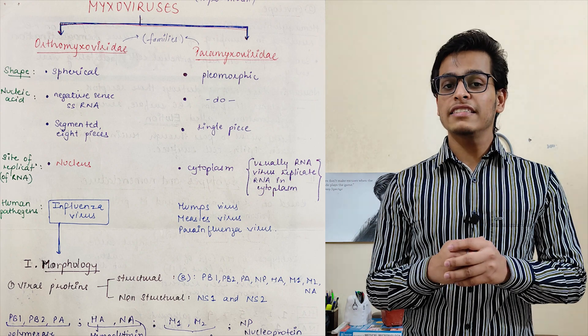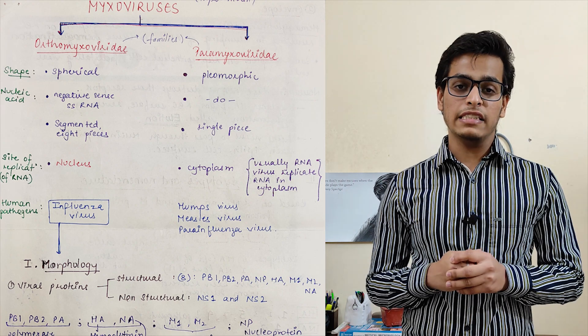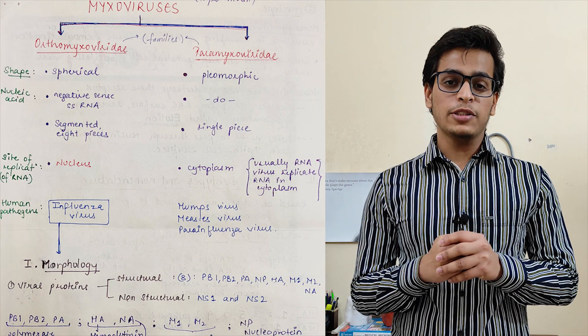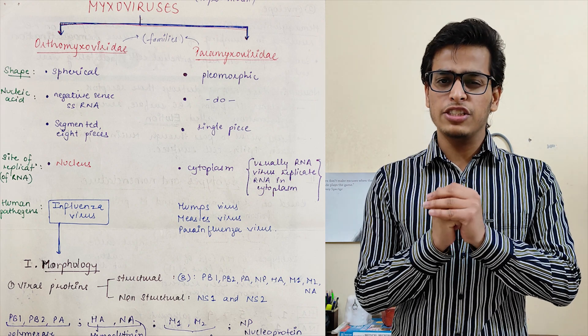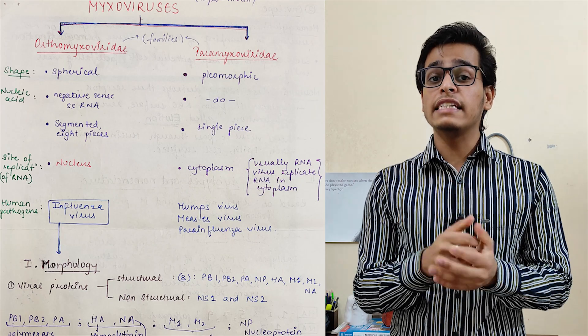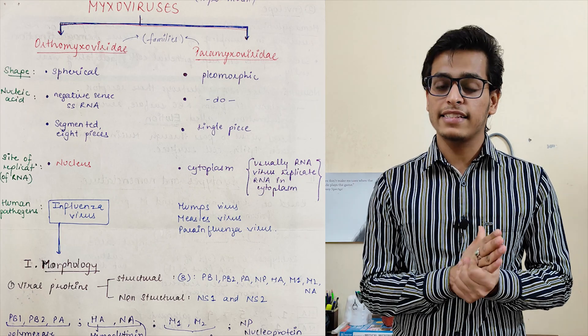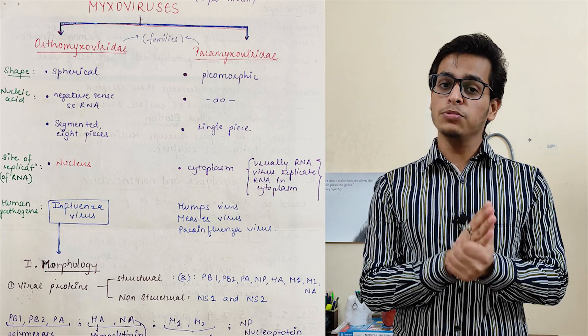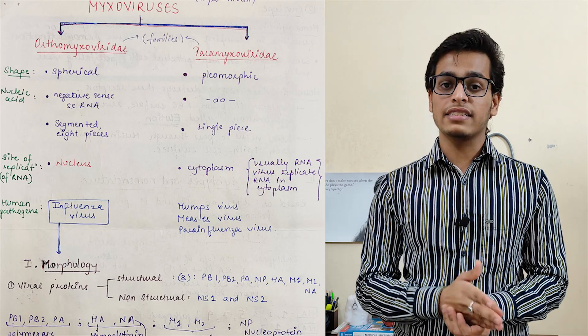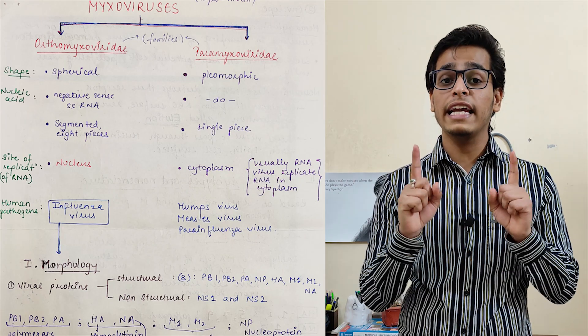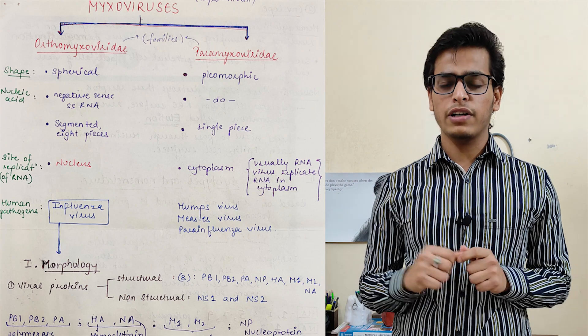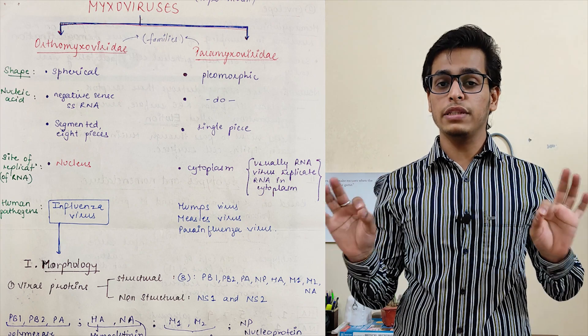If we talk about the nucleic acids in both families: in orthomyxoviruses, the genetic material is segmented — yes, it's an exception, you must remember this. It's segmented into eight pieces, while in paramyxoviruses the genome is a single piece.